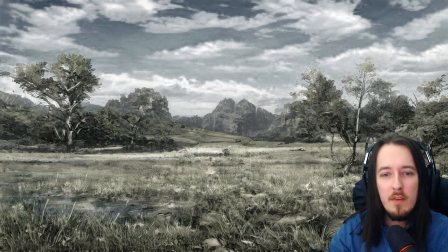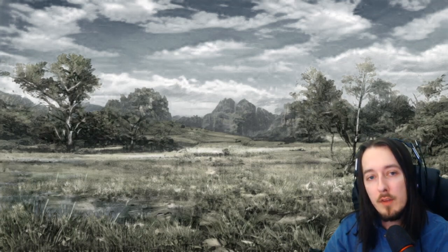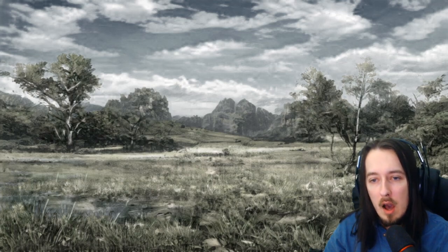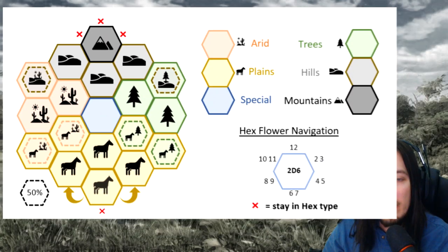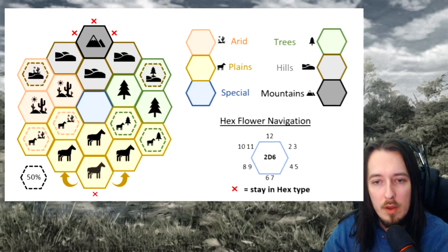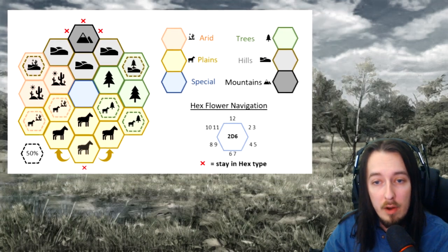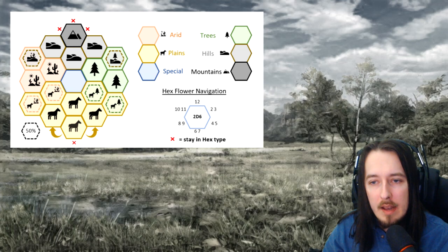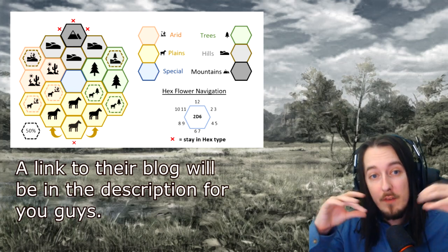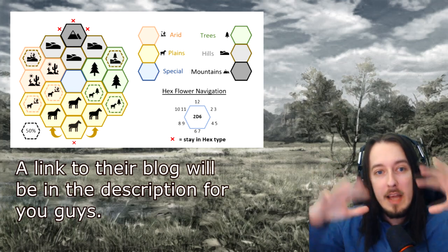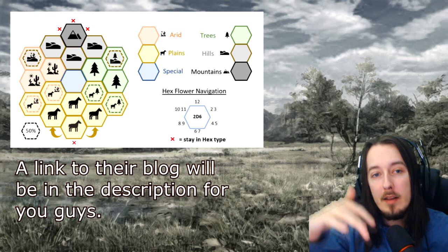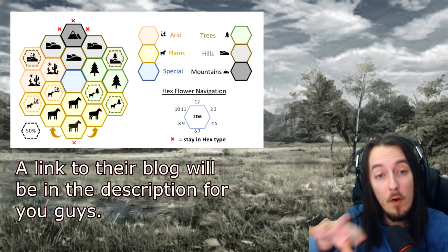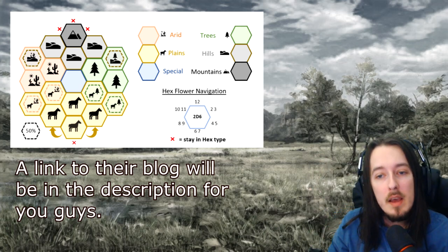Apart from weather, I wouldn't be doing my due diligence if I didn't mention other forms of Hexflowers that people have used in their campaigns. There's one here that allows you to generate terrain, which is pretty cool — it's from a creator called Goblin Henchman. It allows you to change and develop the terrain as you're moving through it, so you can go from plains to hills, and hills to mountains, over to forest, and so on.